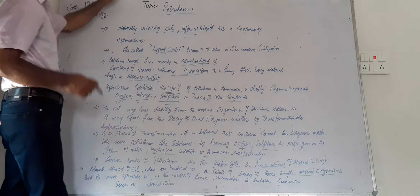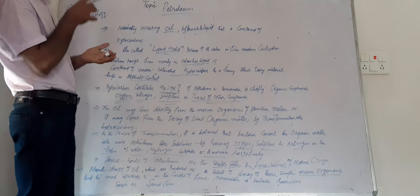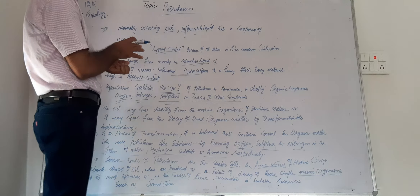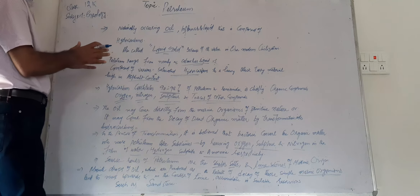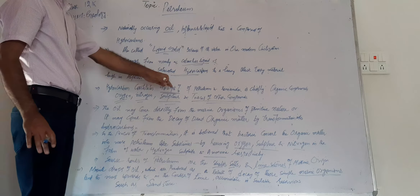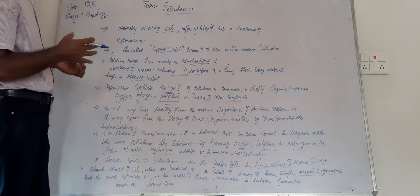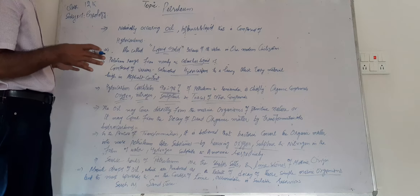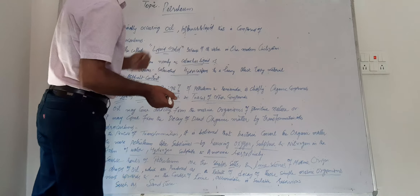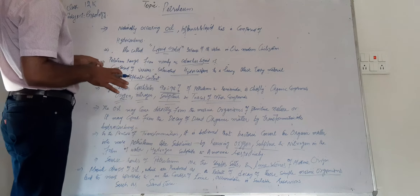Hydrocarbons constitute 90 to 98 percent of petroleum. The remainder of the petroleum material consists chiefly of organic compounds like oxygen, nitrogen, sulfur, and traces of other compounds.